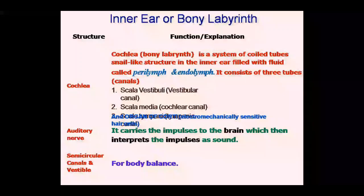The cochlea is called the organ of hearing. It is the whole ear part that actually converts sound vibration to the perception of hearing. Sound enters from the external or outer ear, passes through the middle ear as sound vibration, and when it reaches the cochlea in the inner ear, the sound vibration is converted into hearing perception. So the cochlea works to convert sound vibrations into hearing.